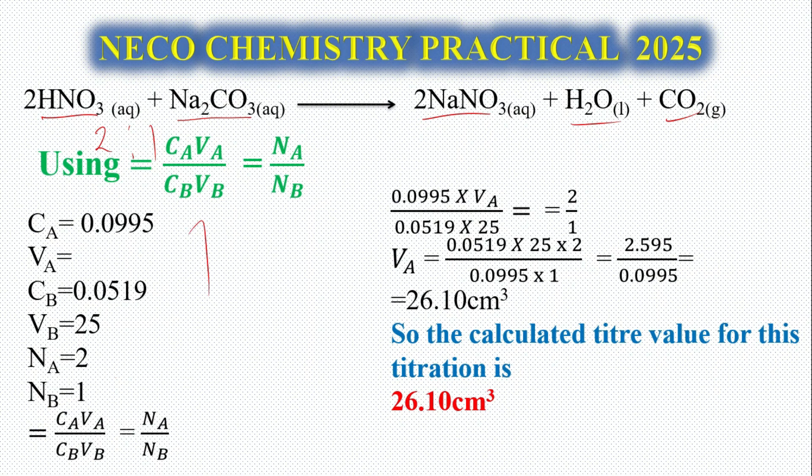Let's look at the parameters: CA, VA, CB, VB. In my school I used 25 cm³, in your school you might be using 20, but for this video we'll use 25 all through. Our Na, number of moles of acid from the balanced chemical equation is 2, while Nb is 1. Using CaVa/Na = CbVb/Nb, you are going to have our expected titre value, calculated value to be 26.10 cm³.